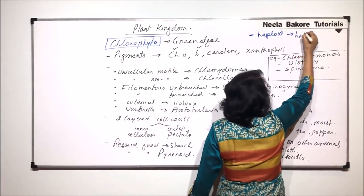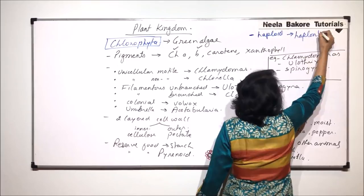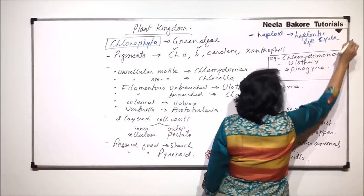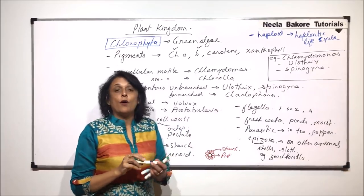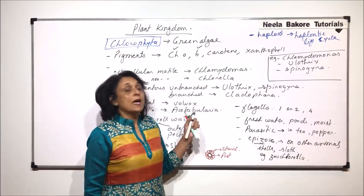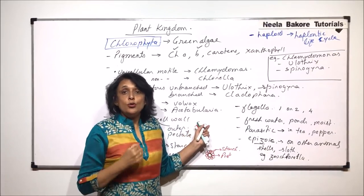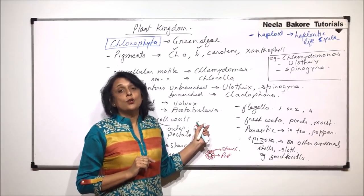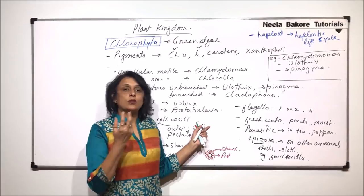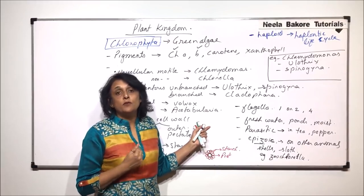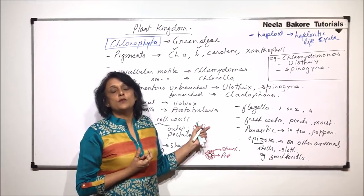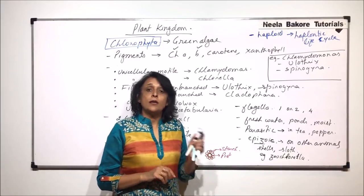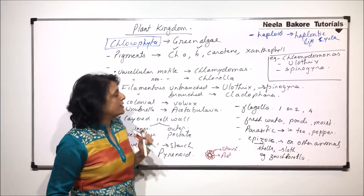The life cycle is haplontic, meaning most stages are haploid. They do show both sexual and asexual reproduction. During sexual reproduction, when haploid gametes fuse, the zygote that is formed undergoes meiosis. So there is zygotic meiosis that takes place in green algae.